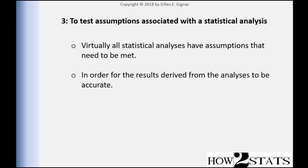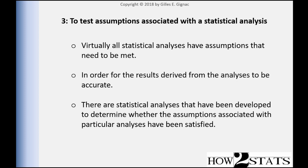We need to do that because we want to infer our results from the sample to the population. In order to actually make that inference justifiably, assumptions need to be satisfied. Random sampling is one — and I mentioned we almost always violate that assumption. There are other very specific assumptions associated with specific analyses, and they have been developed to determine whether those assumptions have been satisfied.